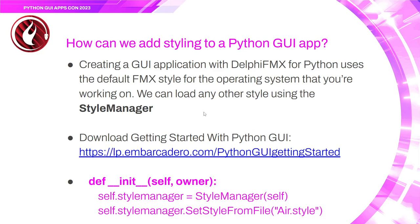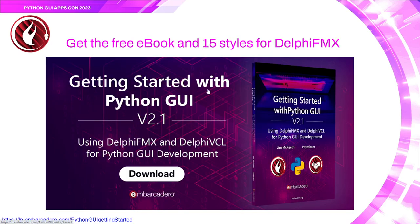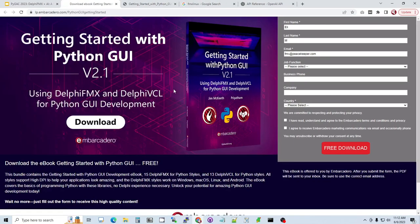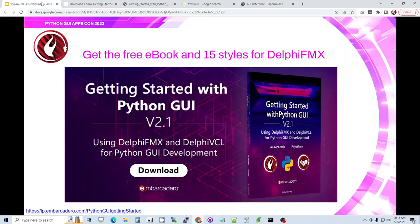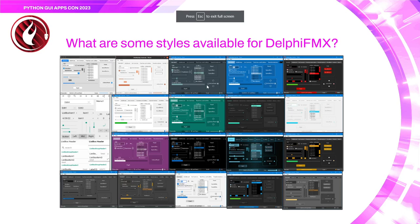To add styling to a Python GUI application built with Delphi FMX: by default it uses the FMX style for the operating system you're working on, but you can load any other style using the style manager. You can get styles from a link along with an e-book providing more information about Delphi FMX. Once you have the styles, you add a style manager right below the __init__ in your application and set the style from file — in this case the Air style. There are also styles for Delphi VCL.